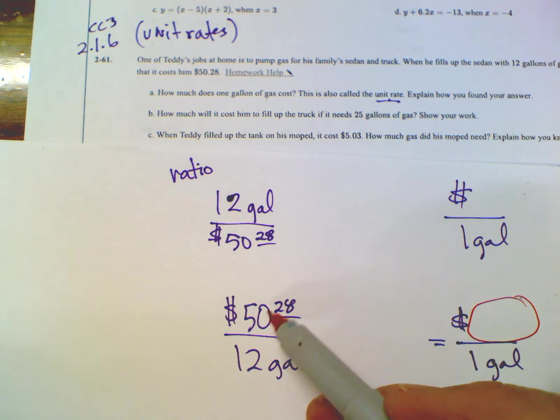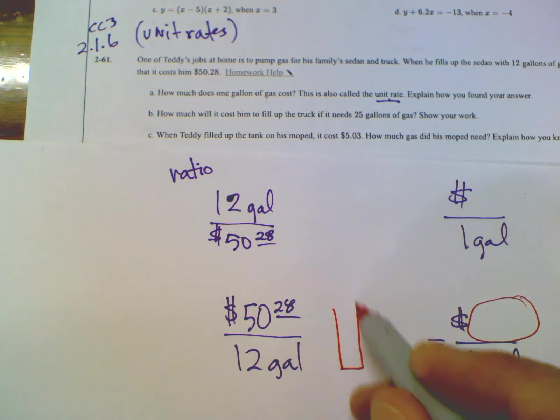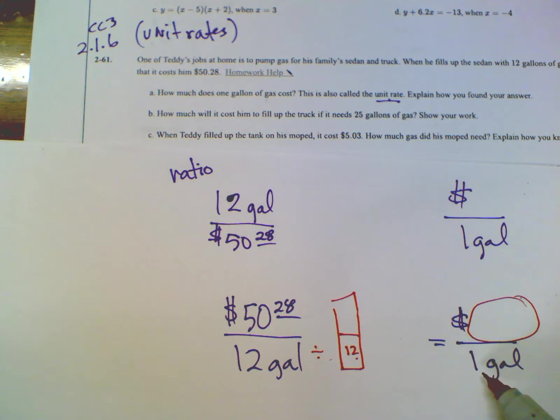Well, if you think about ratios act as fractions, the rules of fractions apply to ratios. So if I need 12 to become a one, I'm going to just use a giant one and divide both top and bottom by the same thing because 12 divided by 12 is one. So as long as I do that on the bottom and top, all it is, is just using a giant one, which doesn't change the value. It just makes it in this case, a unit rate.